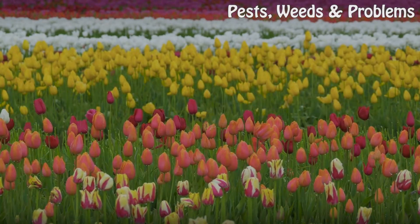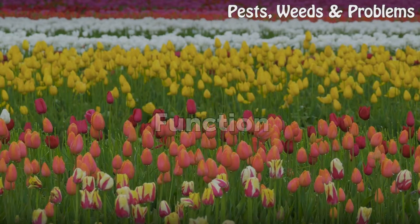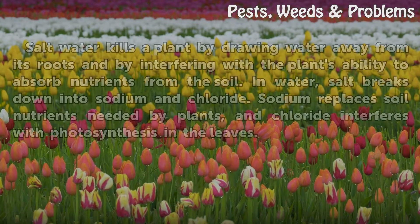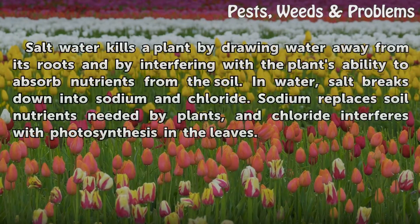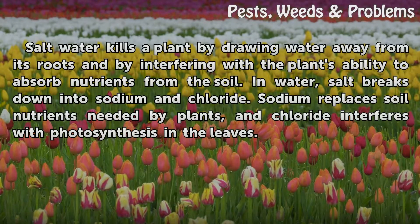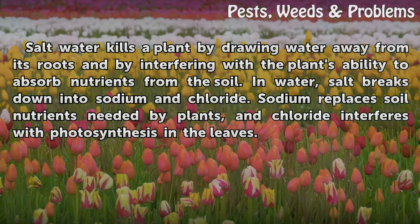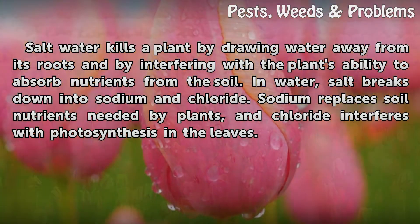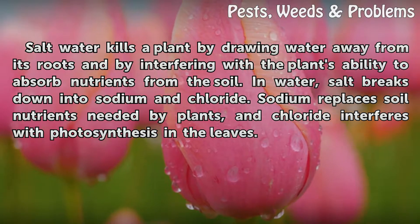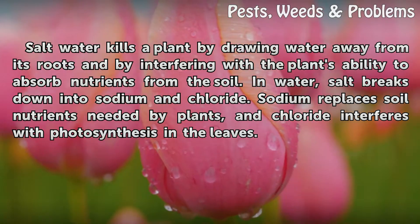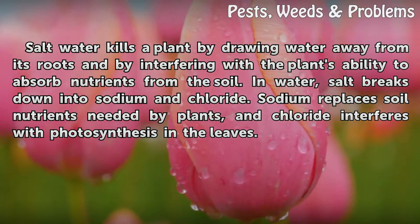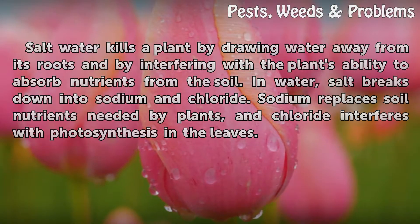Saltwater kills a plant by drawing water away from its roots and by interfering with the plant's ability to absorb nutrients from the soil. In water, salt breaks down into sodium and chloride. Sodium replaces soil nutrients needed by plants, and chloride interferes with photosynthesis in the leaves.